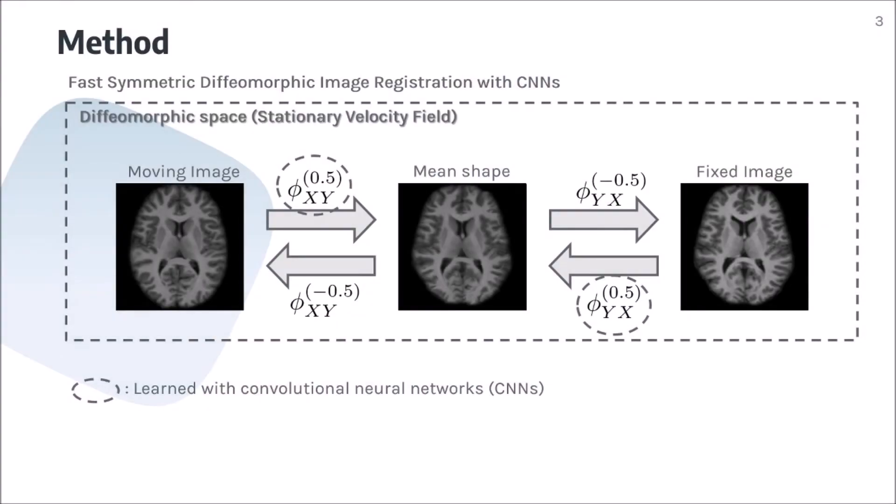Inspired by the conventional method, we propose a symmetric diffeomorphic image registration that aims to register both moving image and fixed image to their mean shape within the space of diffeomorphic maps.